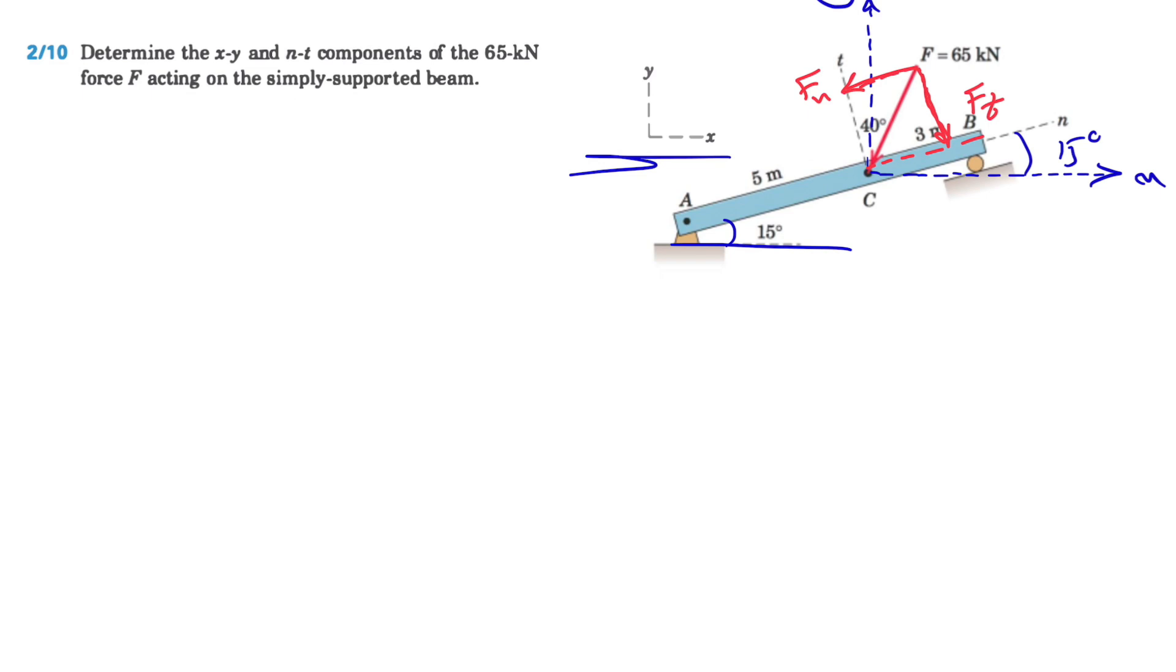So let's start with the first one. If you want to find the Ft component and Fn component, we know this angle right here is 40 degrees from the question. So our Ft, as I said, it will be negative and it will be F times cosine of 40 degrees. If you look at the triangle, this triangle in here, we have a right triangle and our Ft will be this side.